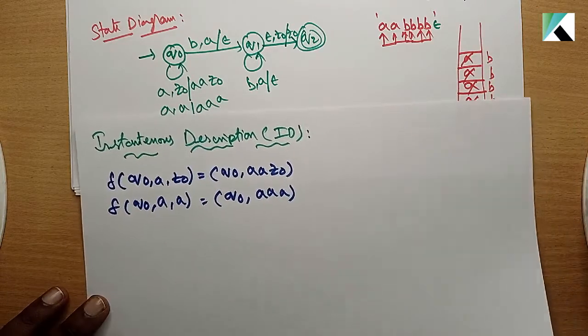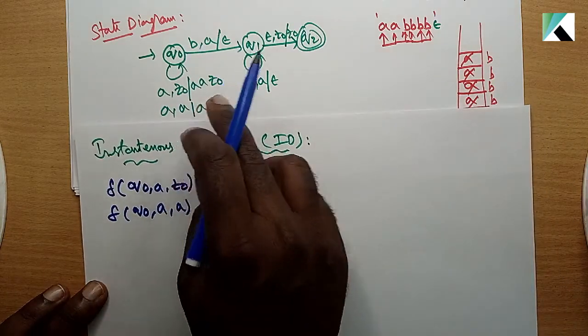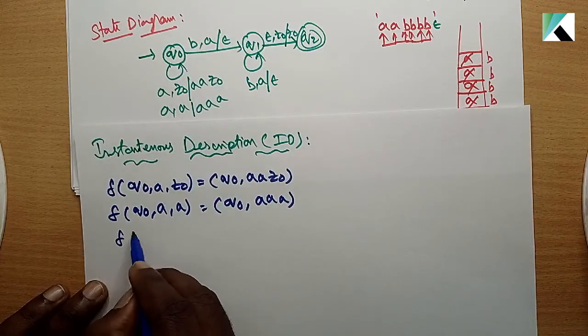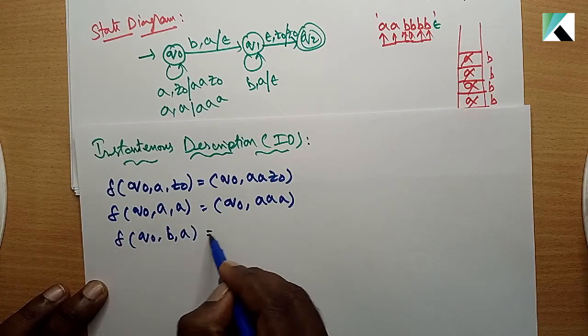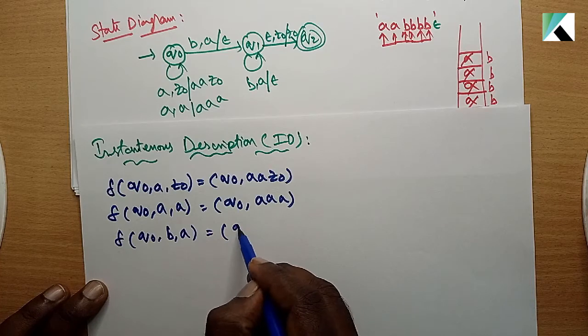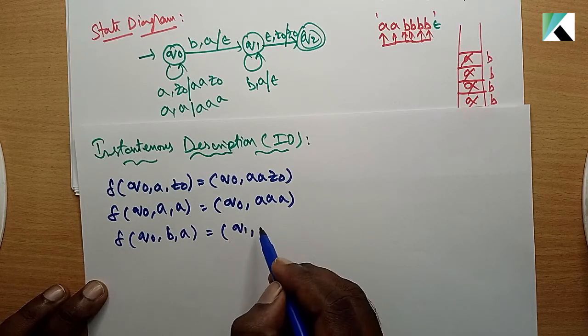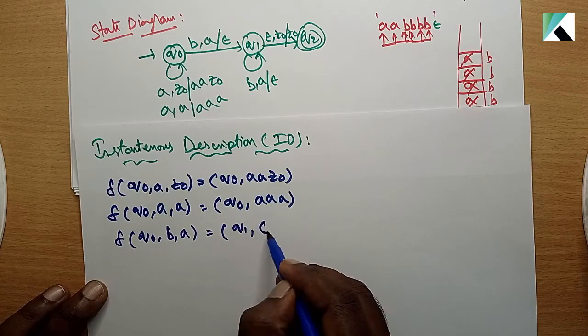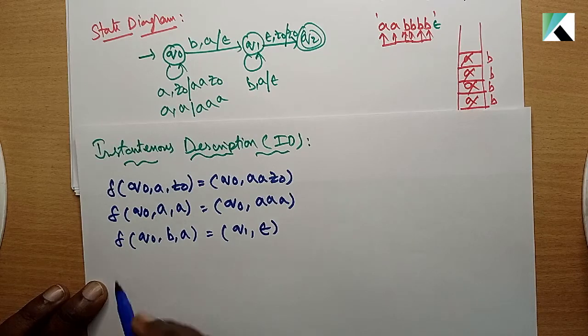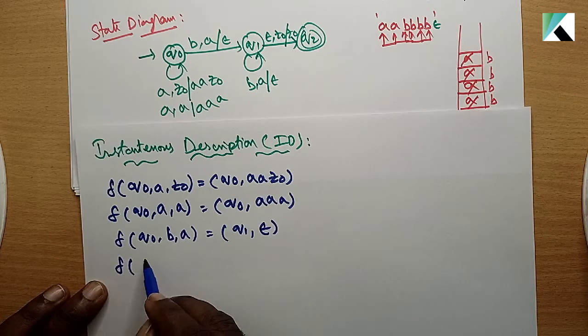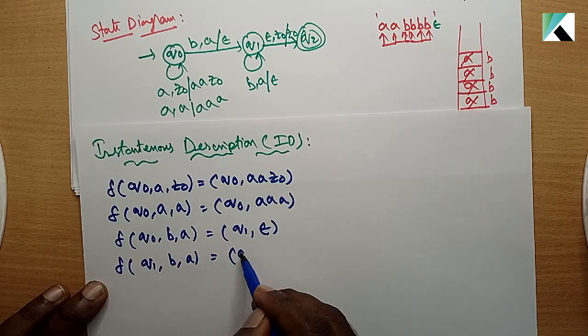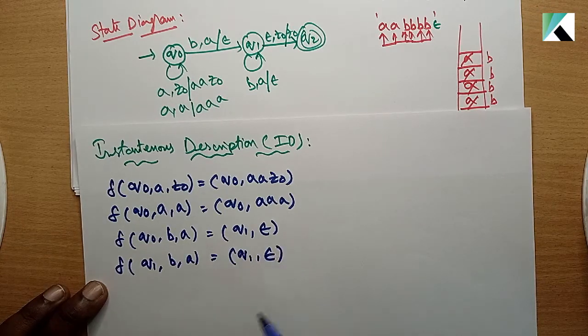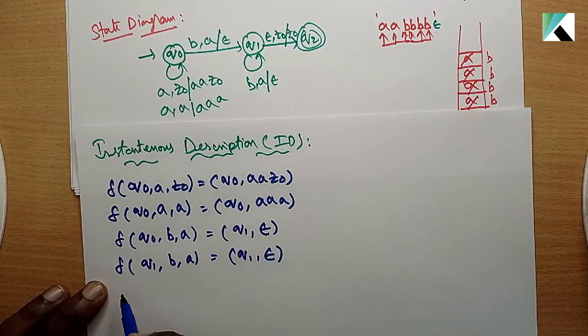Next, b appears. q0 with b and a on top of the stack - simply change the state to q1 and perform the pop operation. Delta q1, again b with a, perform the same pop operation.